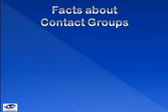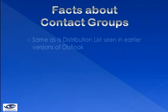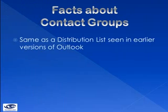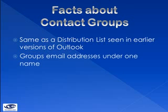First and foremost, a contact group is the same thing as a distribution list, which were created in earlier versions of Outlook. For this video, we are going to be using Outlook 2010, so we will refer to this feature as a contact group. A contact group is a way to group email addresses under one name. That way, when you send a message to the group name, all the names in the group will receive the email.